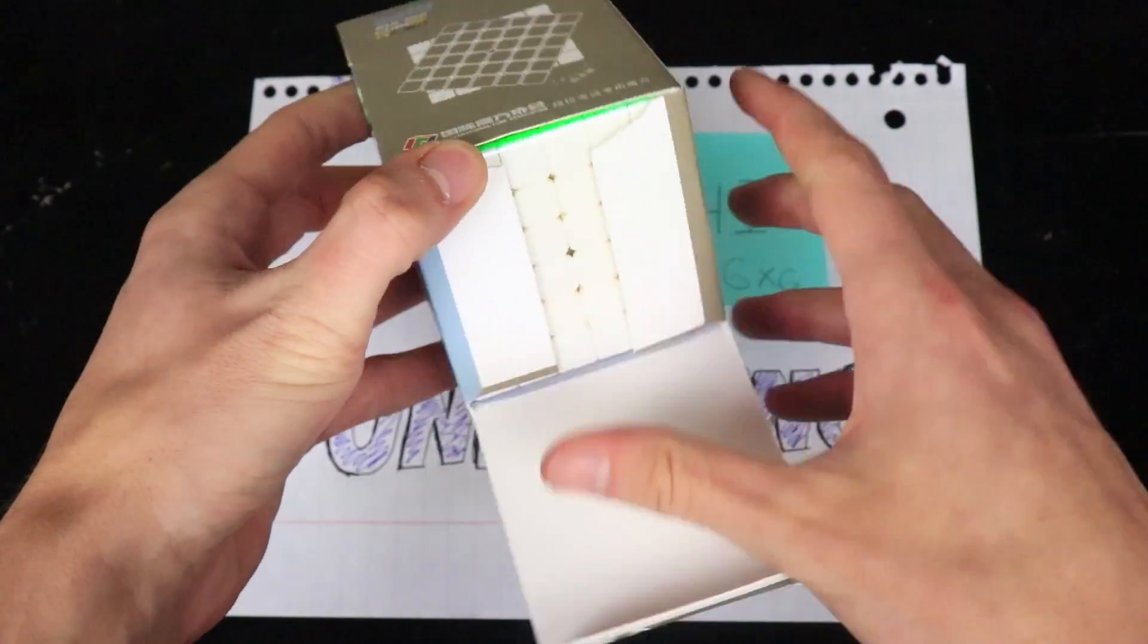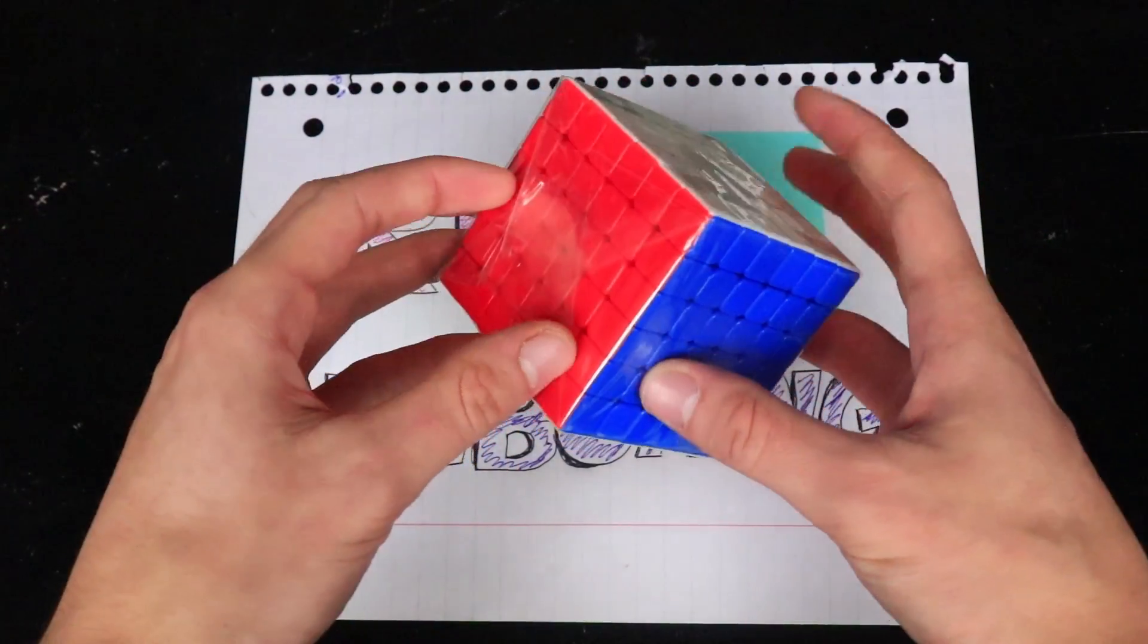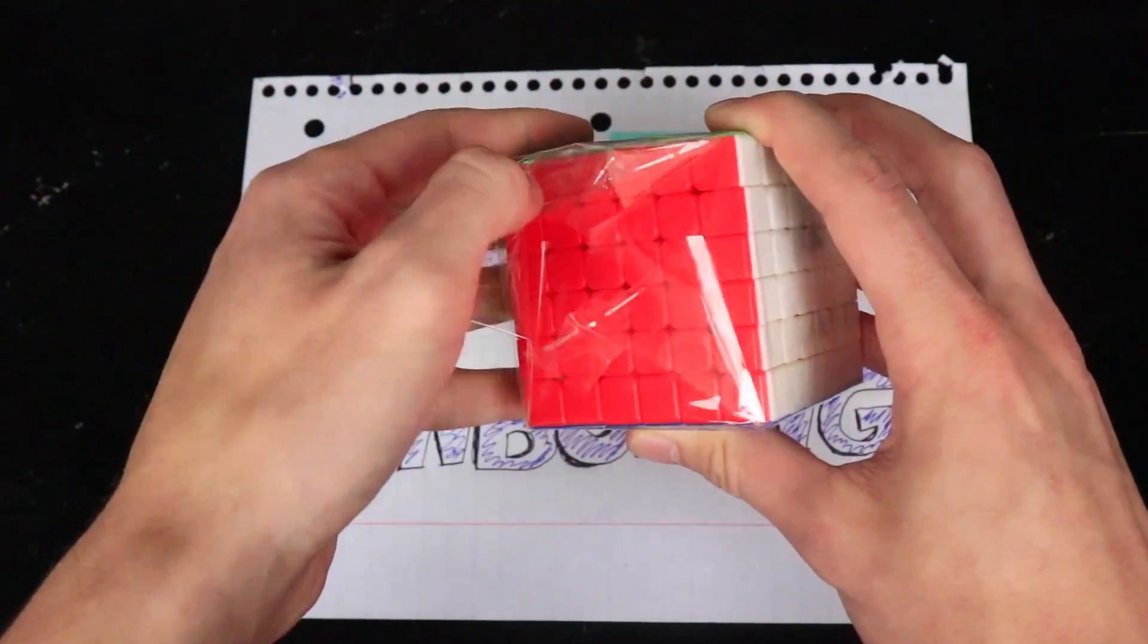So the Ruishi 6x6 is sixteen dollars. That's pretty neat. Pamphlet. And this one actually comes in plastic wrap. The 2x2 through 5x5 actually didn't come in plastic wrap, and so that's nice to see that they are taking care of their puzzles before they get delivered to me.